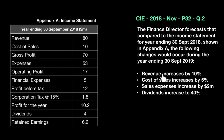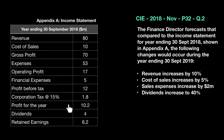The four changes are: number one, revenue increases by 10%; cost of sales increases by 5%; sales expenses increase by 2 million — probably the marketing agency has asked for more money; and dividends increase to 40%, which will obviously make the shareholders happy. You are asked to make these changes to the income statement given.